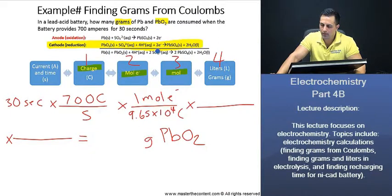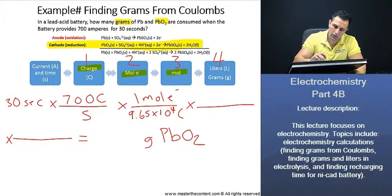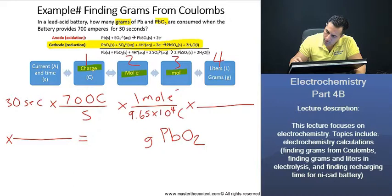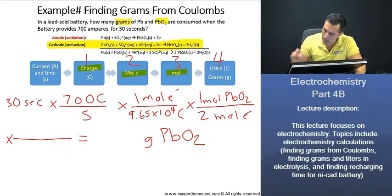Thus, we can just go ahead and write, per mole of our lead oxide, we're going to have two moles of electrons.